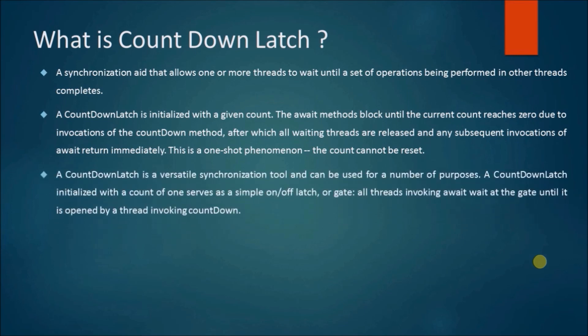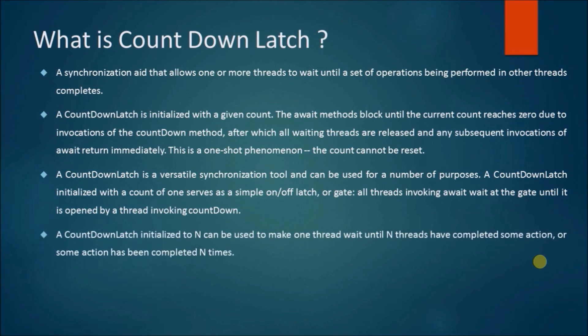A countdown latch is a versatile synchronization tool and can be used for a number of purposes. A countdown latch initialized with a count of one serves as a simple on-off latch or gate — all threads invoking await wait at the gate until it is opened by a thread invoking countdown. A countdown latch initialized to N can be used to make one thread wait until N threads have completed some action, or some action has been completed N times.